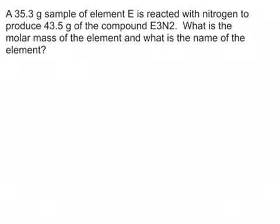In this question, we're given a sample of element E, and it's going to react with nitrogen to produce the compound E3N2. We know that we're given 35.3 grams of our element E, and we end up with 43.5 grams of our compound E3N2.